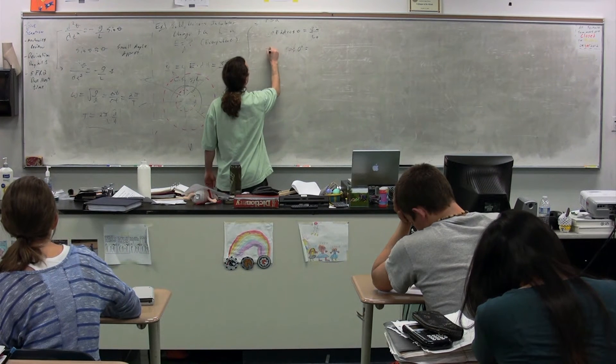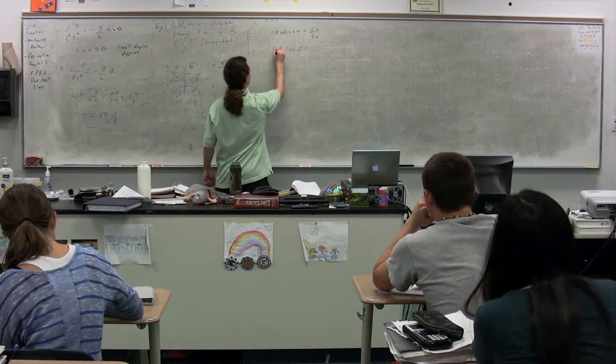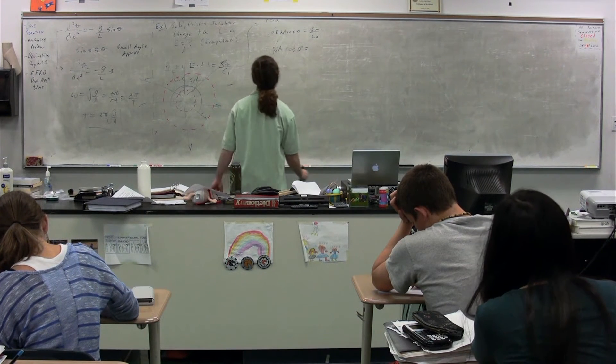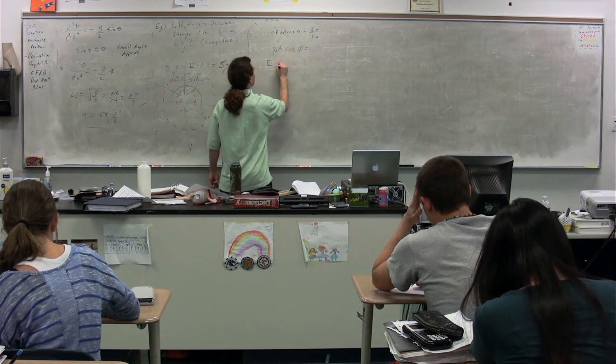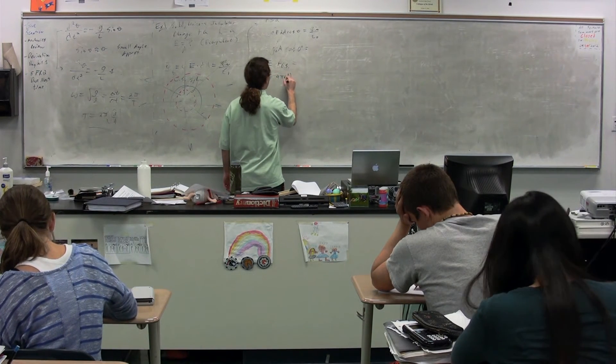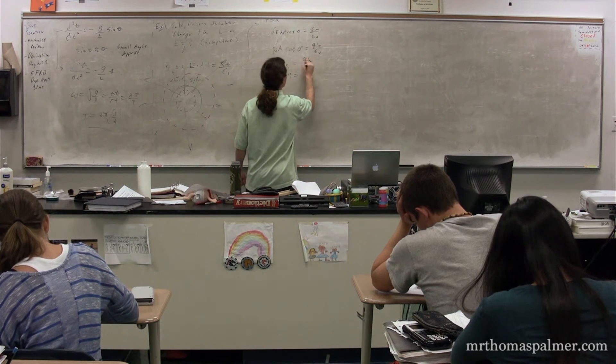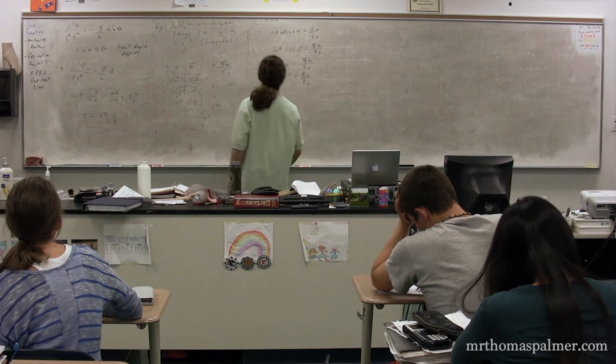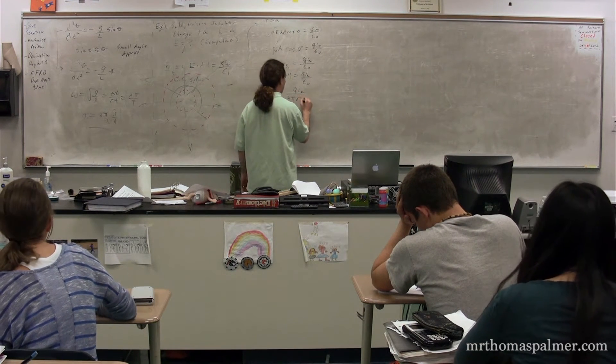E is constant, so you can pull it out. So it's just E, close surface integral of DA. So then the closed surface integral of DA is 4 pi r squared. I'm going to put the area of the Gaussian surface first, but yes, it is definitely equal to 4 pi r squared. The surface area of the circle, charge inside over epsilon naught.